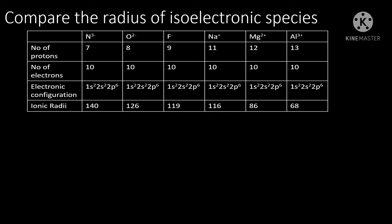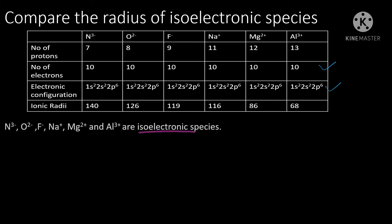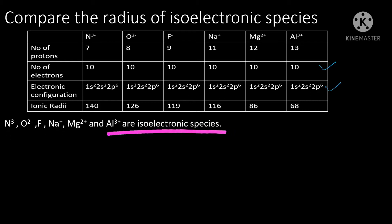Nitrite ion, oxide ion, fluoride ion, sodium ion, magnesium ion, and aluminum ion all have the same number of electrons, therefore the same electronic configuration, and therefore they are isoelectronic species.